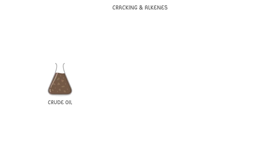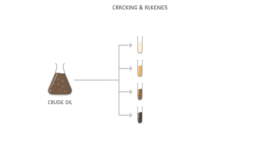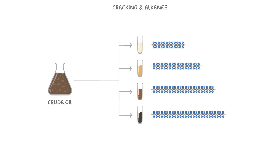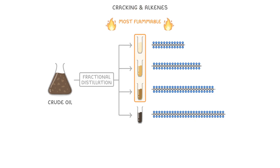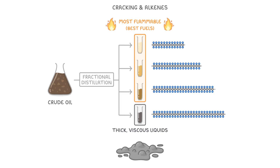We saw in the last video that we can think of crude oil as a mixture of lots of different hydrocarbons, and that we can separate out these different hydrocarbons by the length of their carbon chains using a process called fractional distillation. We also saw that the shortest hydrocarbons are the most flammable and so they make the best fuels, whereas the longer chain hydrocarbons are thick, viscous liquids, which makes them comparatively less useful. So in today's video, we're going to look at how these longer, less useful hydrocarbons can be broken down into shorter, more flammable hydrocarbons in a process we call cracking.